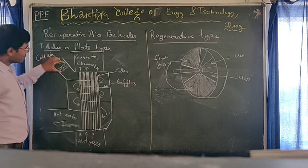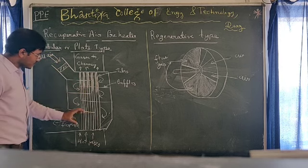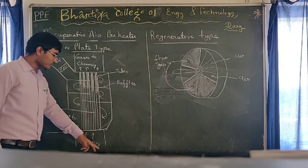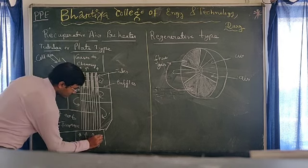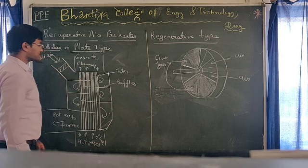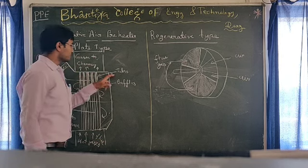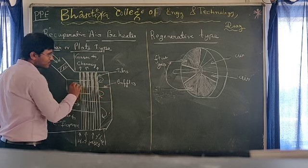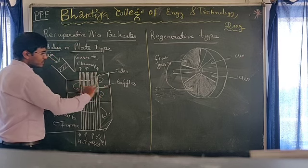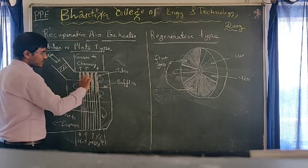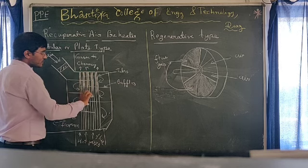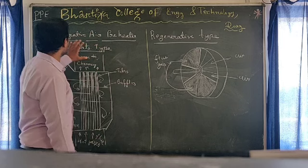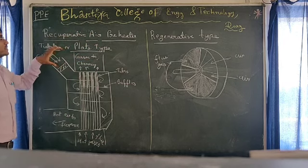This is the recuperative type — there are tubes through which the hot flue gas flows, and there are baffles or separators where the cold air moves in different sections to become hot. This is one type of air pre-heater — the recuperative air pre-heater.